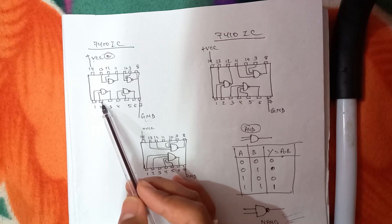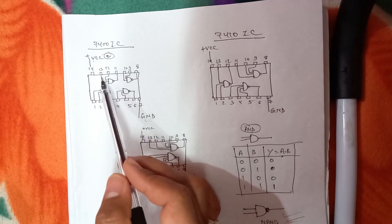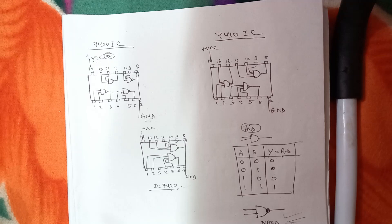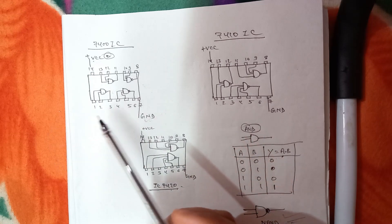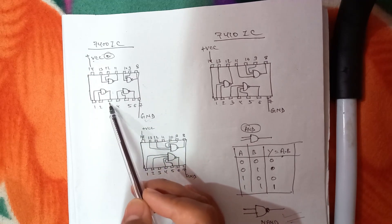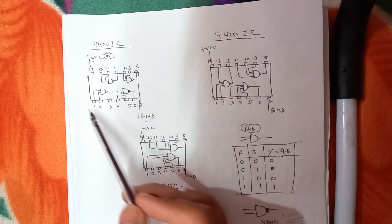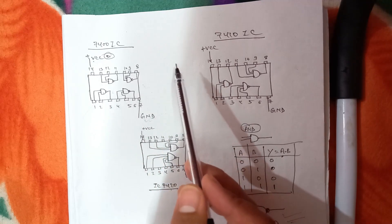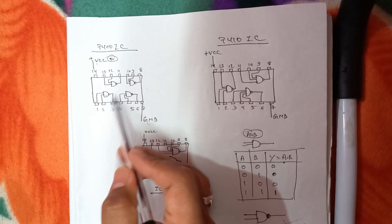First, we need to check whether each NAND gate is working or not. In our practical lab, sometimes the IC will be damaged and we will not get the correct result. So what we do is connect two wires after giving VCC and ground, and connect the output to a multimeter. When we give both inputs high, the multimeter shows low; when we give both inputs low, the multimeter shows high; and if any one input is low, the multimeter shows high. The truth table must be followed.